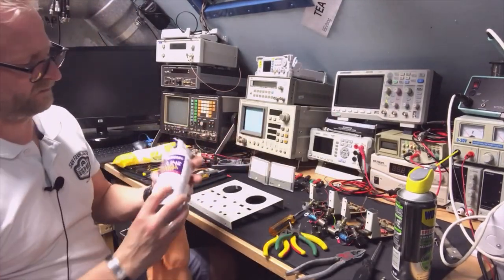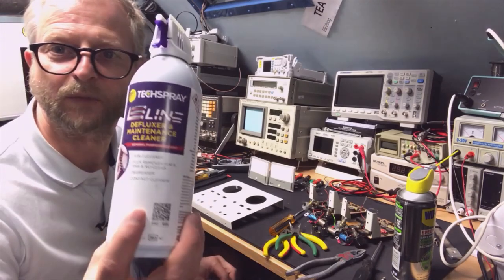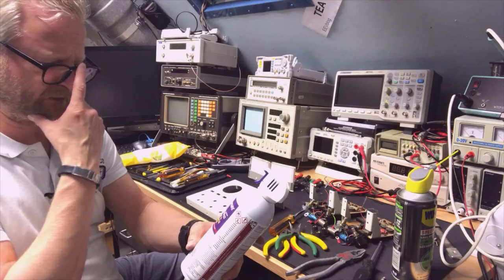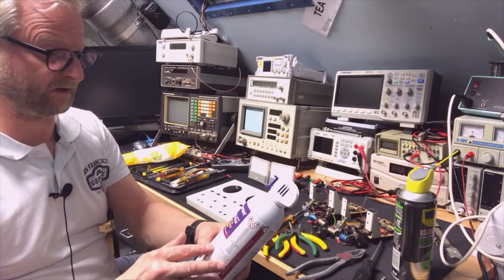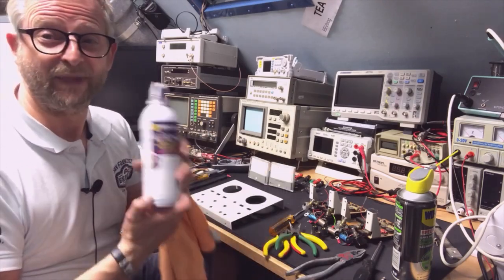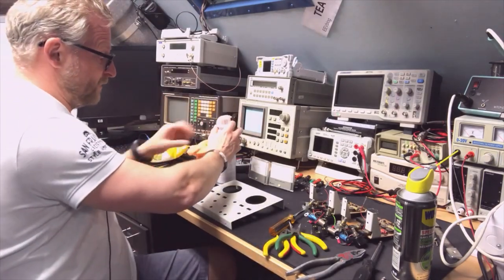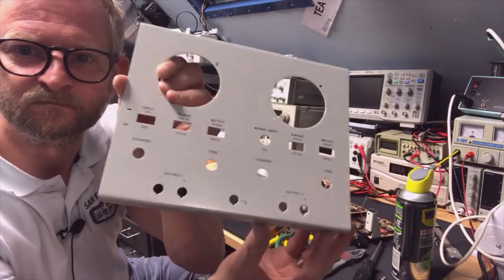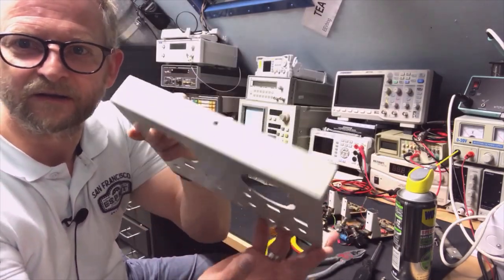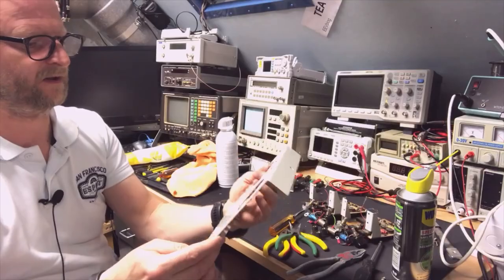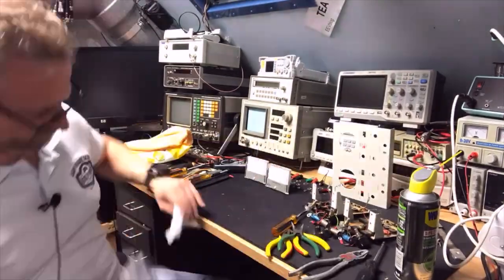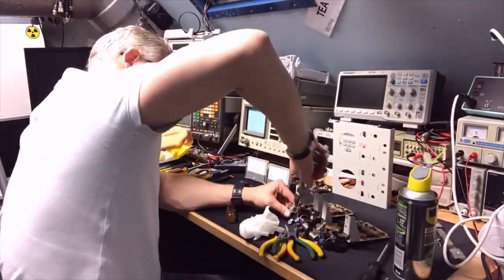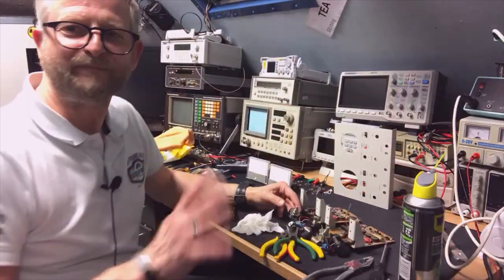Now I'm cleaning the front. I have this multi-purpose - I think it's an IPA alcohol thingy. It's a flux remover, degreaser, contact cleaner. It's an all-in-one, but it works like wonder. Look. It's like new. The stickers just go off. Super. That is nice.